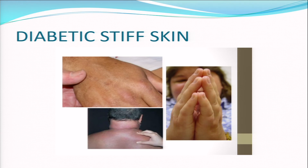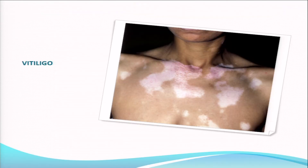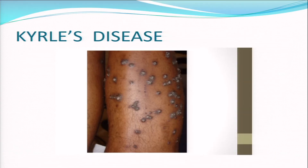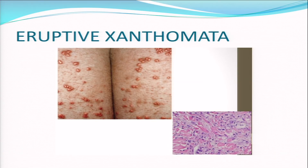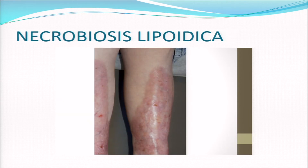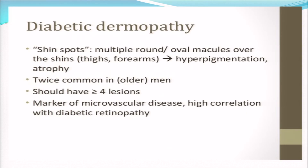Yellow nail discoloration is the scleredema of Buschke in diabetes. Vitiligo occurs in diabetics because of autoimmune disease, very commonly seen in elderly diabetics - there is an association. Yellow nails, insulin lipodystrophy, and Kyrle's disease are other associations. Eruptive xanthomas and granuloma annulare are rare - we sometimes take a biopsy and treat. Diabetic dermopathy is very commonly called shin spots.